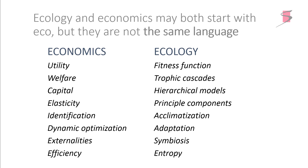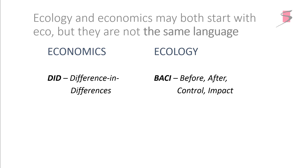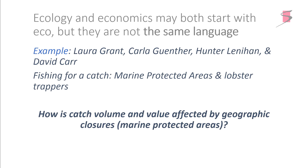I'll give an anecdote from working with ecologists, with a little preview from Paul's talk: difference-in-difference and BACI. Turns out these are pretty similar approaches. Economists call it difference-in-difference; ecologists call it BACI. I'm working on a paper — 'Fishing for a Catch' — with myself, two ecologists, and a geographer, looking at marine protected areas and lobsters off the Santa Barbara coast, asking how catch volume and value are affected by these geographic closures.